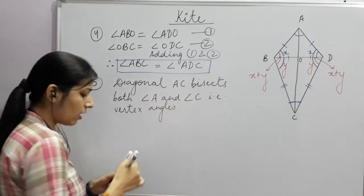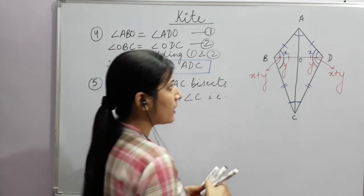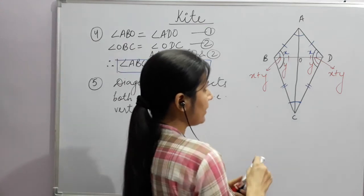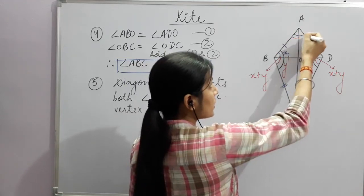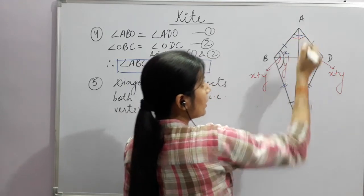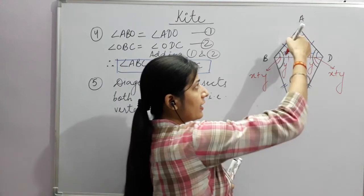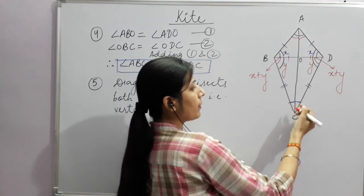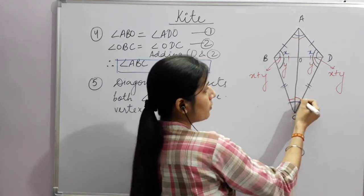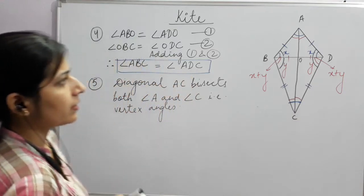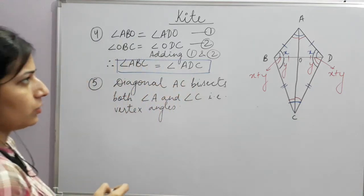Bisect means if the full angle A is 60 degrees, then diagonal AC divides it into 30 degrees and 30 degrees. Similarly it divides angle C into two equal parts.